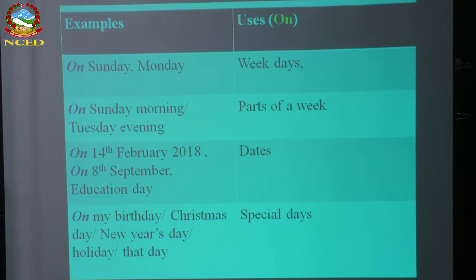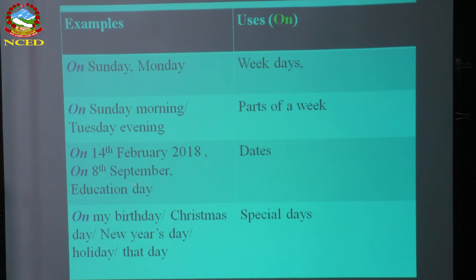On is used with days — no doubt: on Sunday, on Monday, up to Saturday. With days, we use 'on.' Remember: we say 'in the morning,' but when we say 'on Sunday morning' or 'on Monday evening,' we use 'on.' For dates: on 14th February 2018, on 8th September — with dates, we use 'on.' Also on my birthday, Christmas Day, New Year's Day, holiday — when the word 'day' is present, we use 'on.'